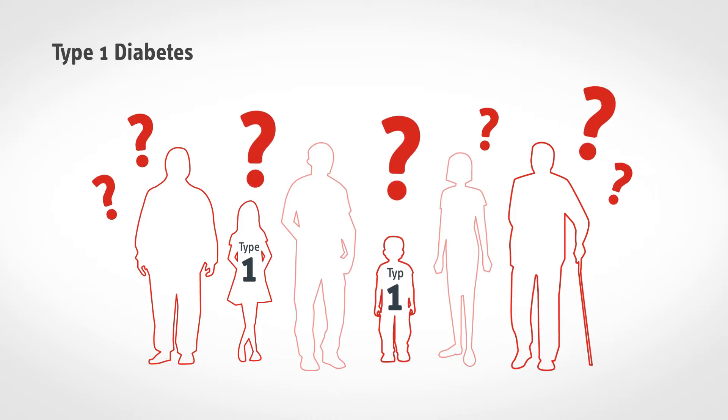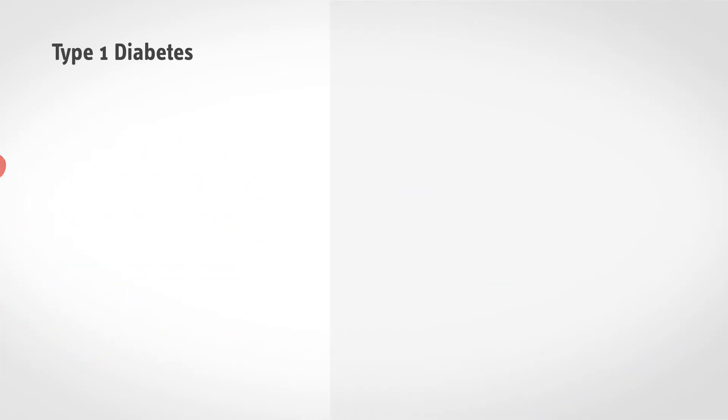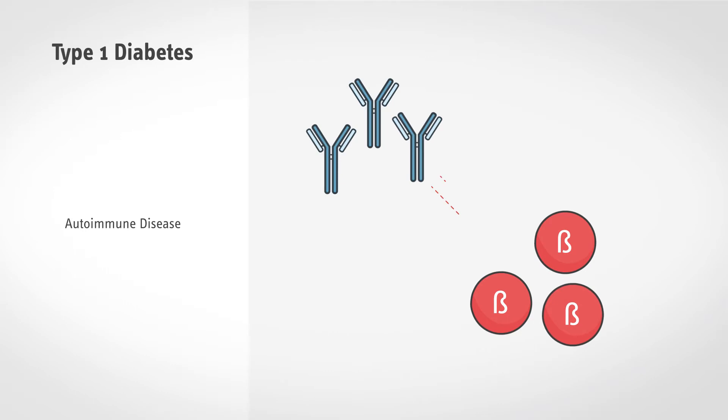Can onset of the disease be prevented? Type 1 diabetes is an autoimmune disease, which means that the body fights its own naturally occurring cells using the weapons of its immune system. Currently, type 1 diabetes cannot yet be prevented.